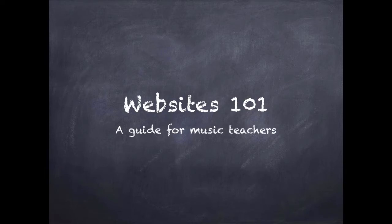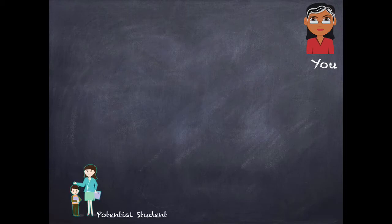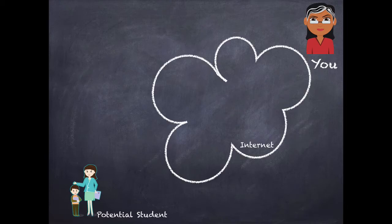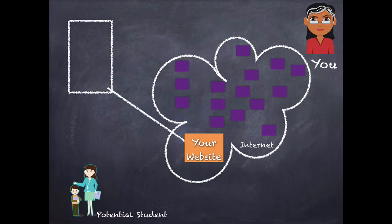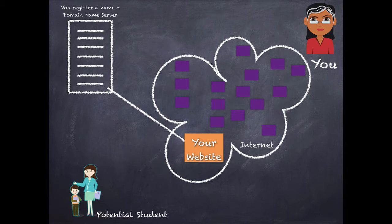I want to talk a little bit about what goes into a website. Let's say this is you and this is your potential student and they're trying to find you. Now here's the internet — a big collection of computers connected together. There are lots of websites on them. Now your website needs two things before it can actually be found. It needs a name. So you're going to register a name and it's going to go on this big list called a domain name server list — DNS.